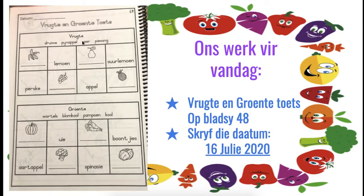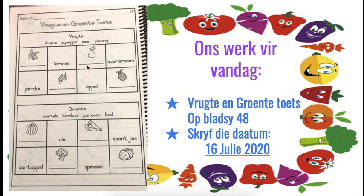The first section says vruchte. You've got some with pictures and some with words. For the words you're going to fill in: druiwe, pineapple, peer, and pisang. The pictures you're going to draw are: perske, suurlemon, apple, and lemon. So fill in the words or draw the picture for your fruit. If you need to go back and listen to the words, please go back and listen to your video. Please do this on your own — do not go back into your book and look for the words. Okay boys and girls, you can do this by yourself!